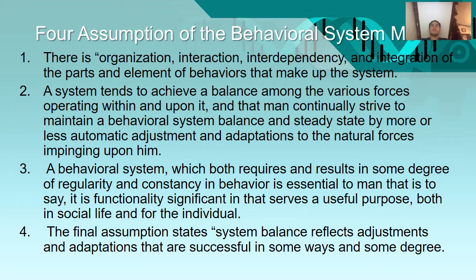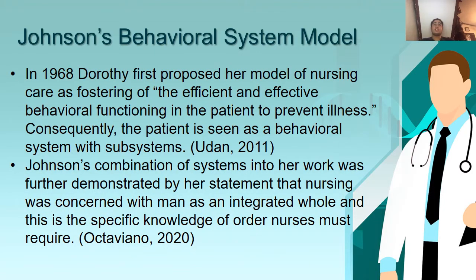The four assumptions of the behavioral system model. First, there is organization, interaction, interdependency, and integration of the parts and elements of behaviors that make up the system. Second, a system tends to achieve a balance among the various forces operating within and upon it. Third, a behavioral system which both requires and results in some degree of regularity and constancy in behavior is essential to the individual, serving a useful purpose both in social life and for the individual. Fourth, the final assumption states system balance reflects adjustment and adaptation that are successful in some ways and to some degree.